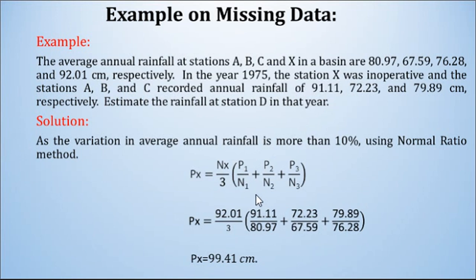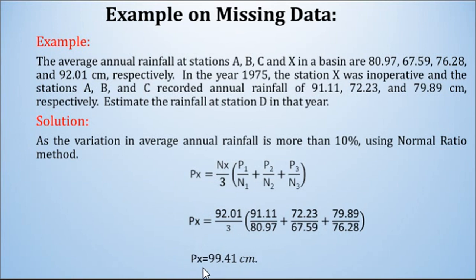...where N1 = 80.97. After substituting all values of P1, N1, P2, N2, P3, and N3 into the formula, the estimated rainfall at station D is 99.41 cm for the year 1975. Even though station D had no recording that year, we can predict the missing rainfall using data from the surrounding three stations.